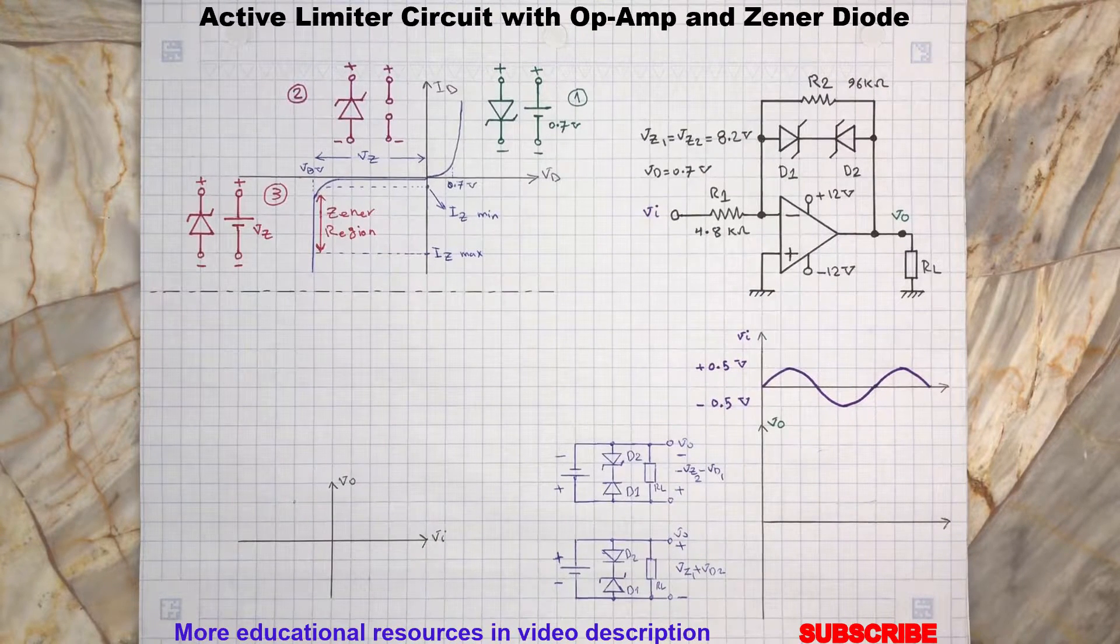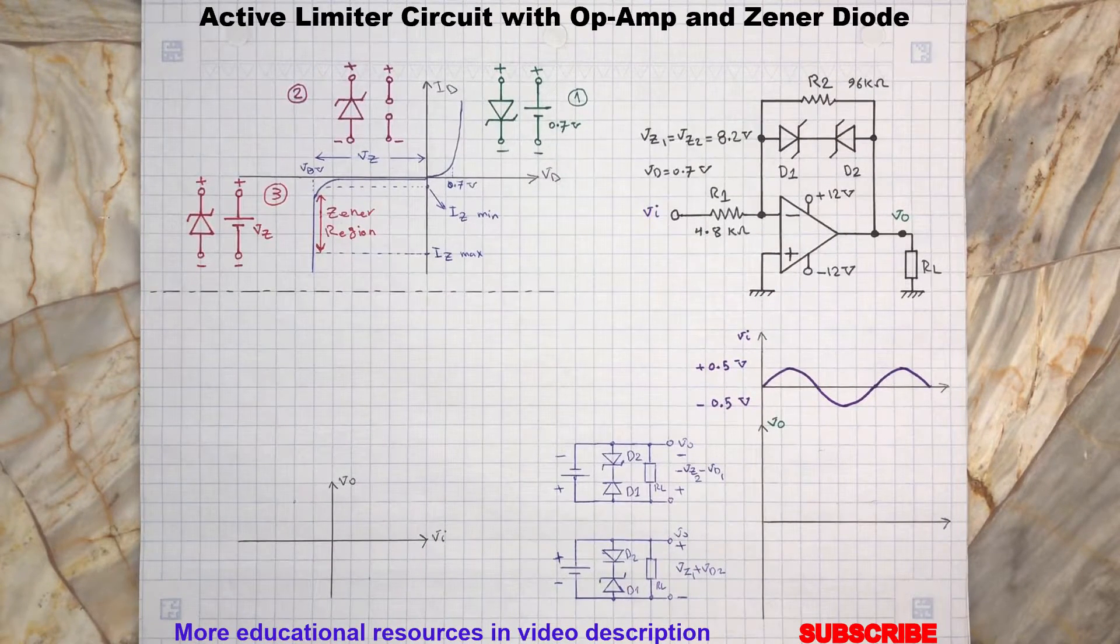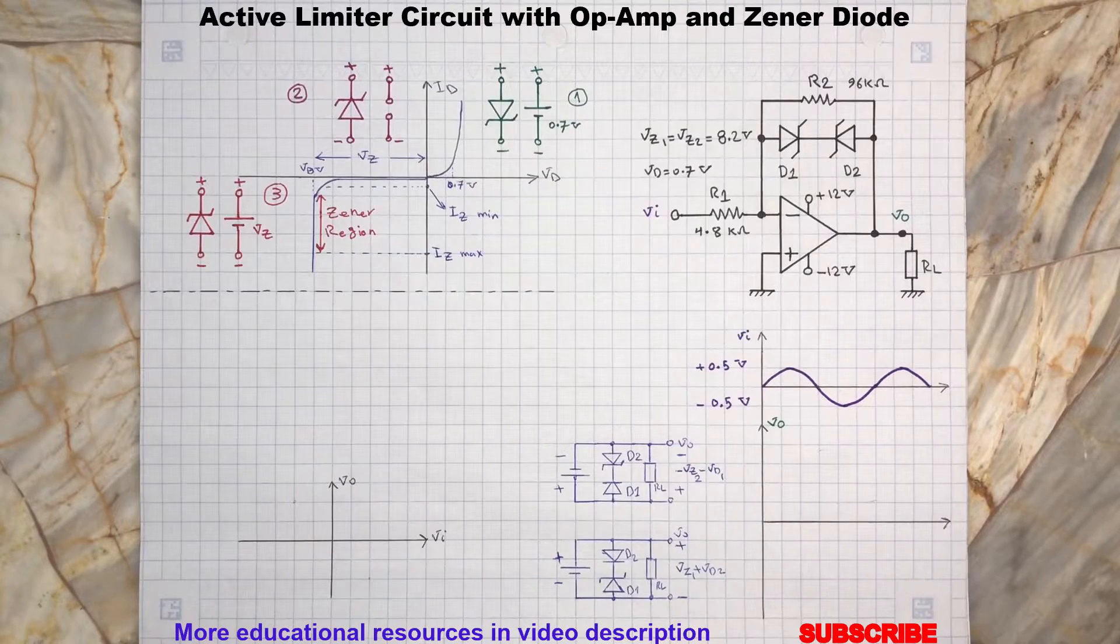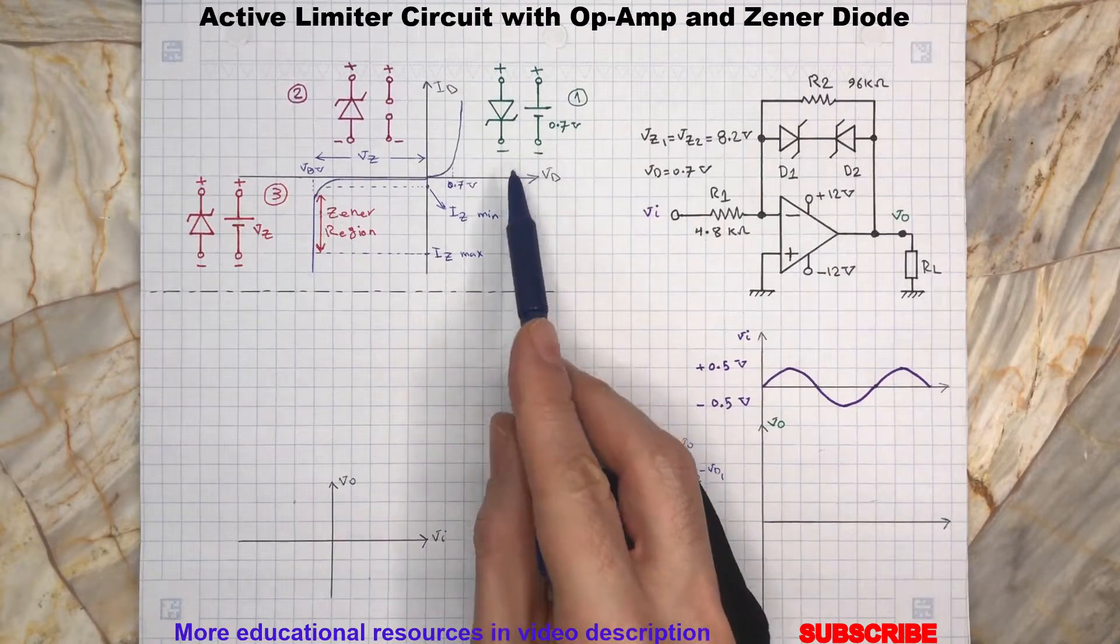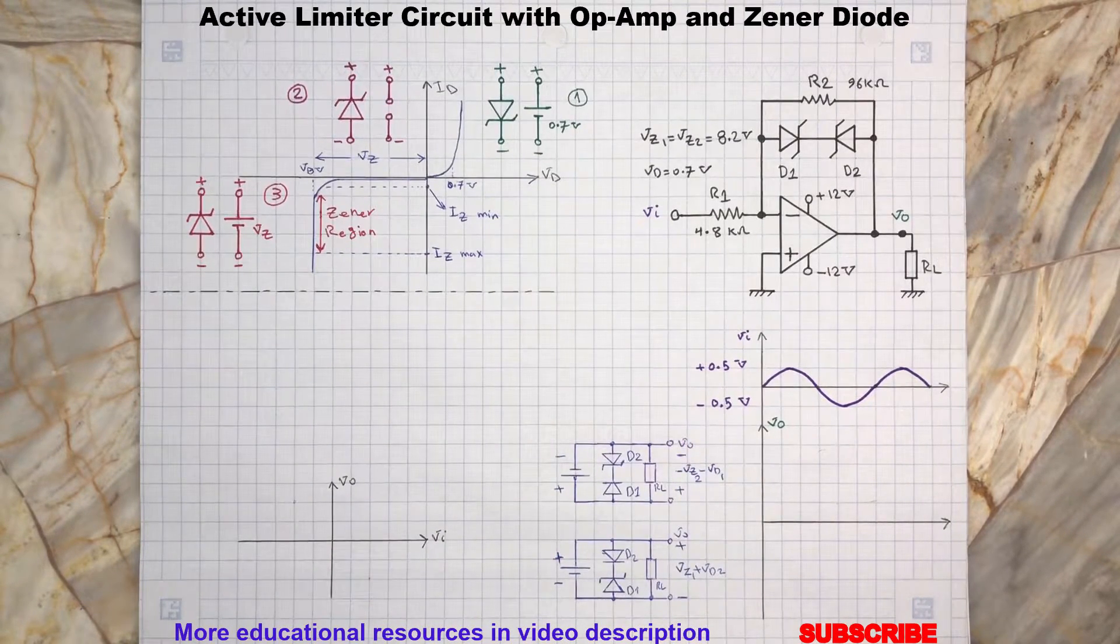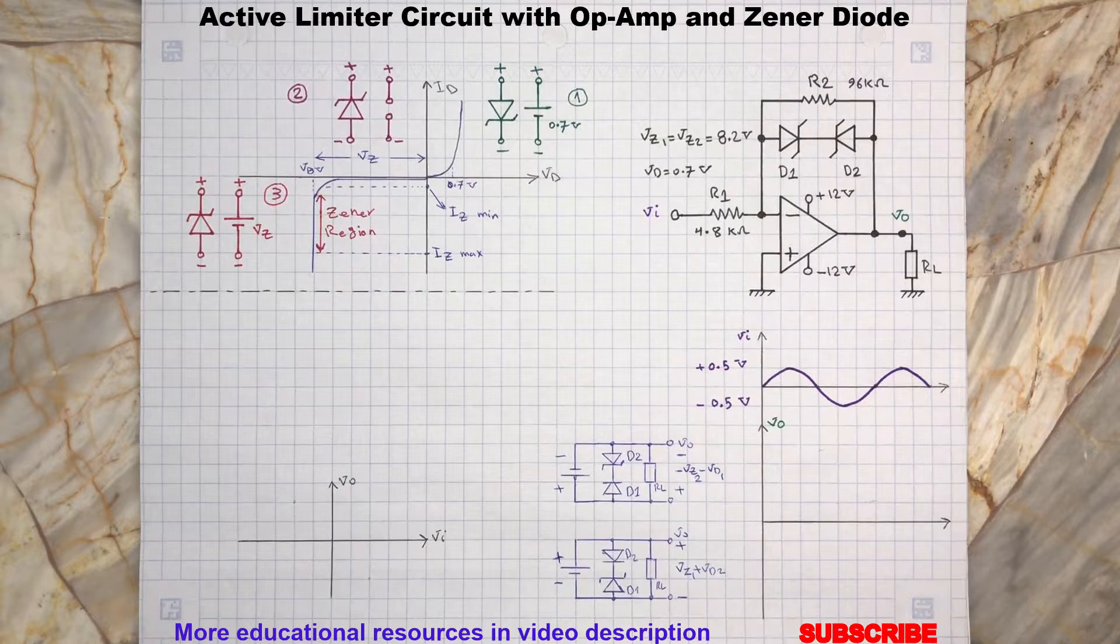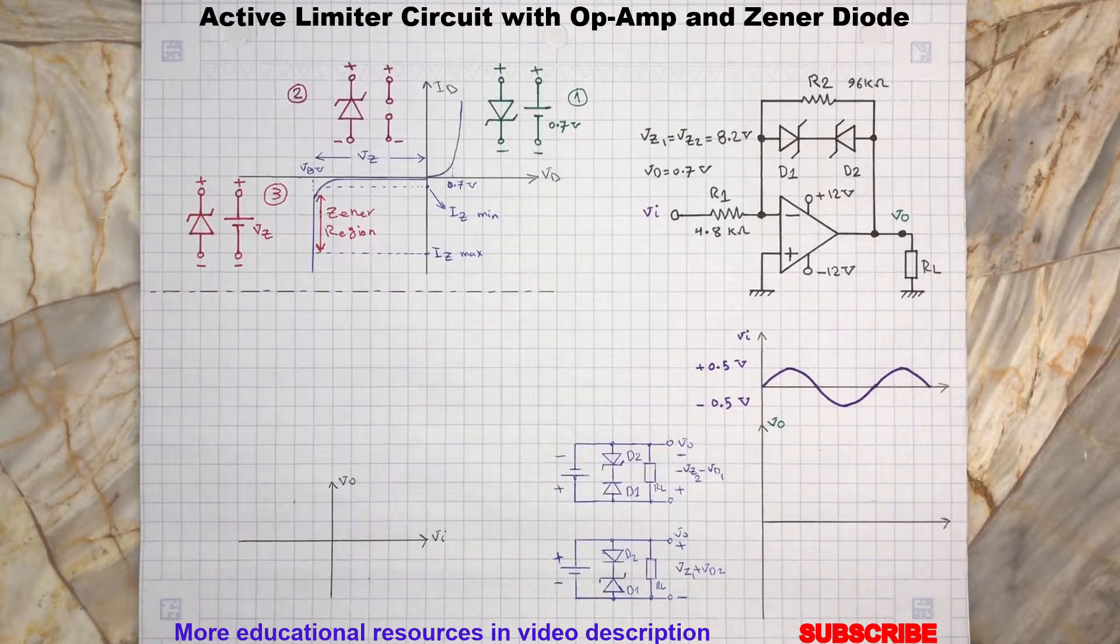When a Zener diode is forward biased, then it will operate as an ordinary diode. So it allows current flow in one direction and prevents current flow in opposite direction.